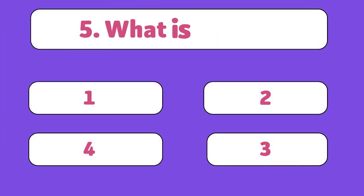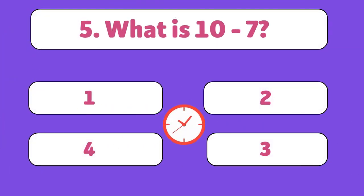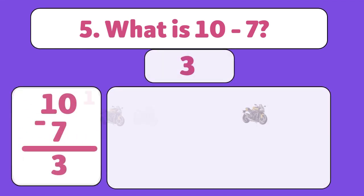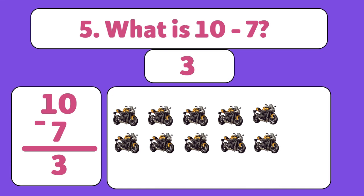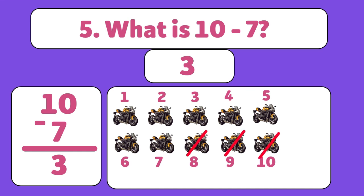What is ten minus seven? The answer is three. We start with ten motorbikes and take away seven. Let's count. One, two, three, four, five, six, seven. We have three motorbikes now.